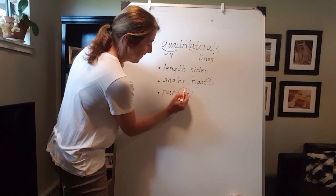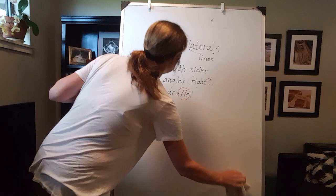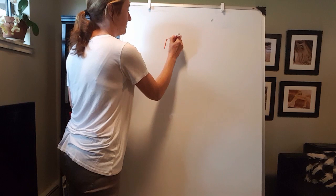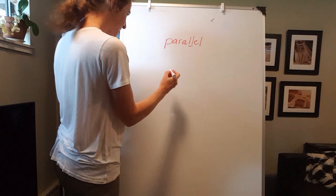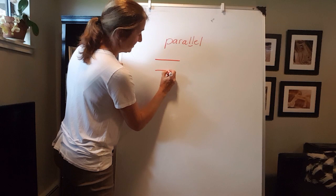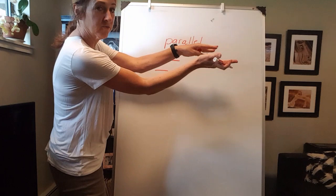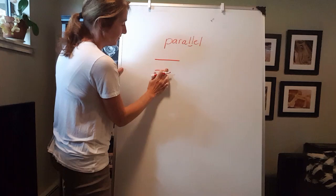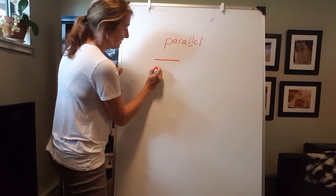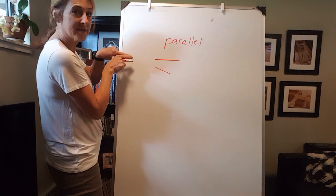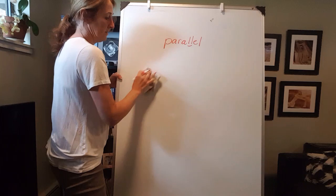One way to remember parallel lines is to look right here in this word — these two lines right here are parallel. Parallel is two lines that are going in the same direction. They do not have to be the same length, but they're going in the same direction, and if they were to continue forever in either direction, they would never cross. They would just always be the same distance apart. They're not leaning toward each other — that is not parallel, because if these lines continued, eventually they would intersect or go further apart. Those are not parallel.